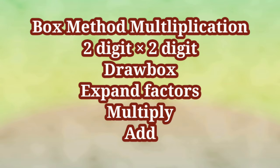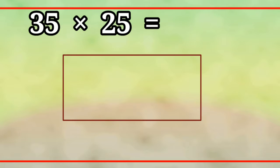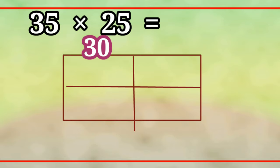Multiplication in box method. For example, 35 x 25. We have 2 factors. In the box method, we will use this box method.